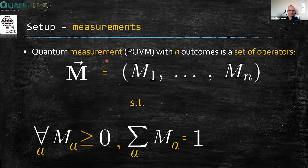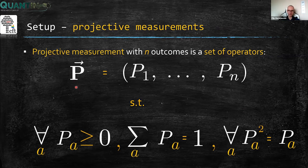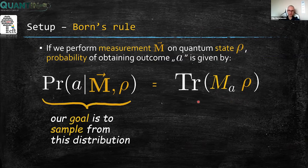Let's start with the basic definitions. A quantum measurement, or a POVM with N outcomes, is a set of operators which are positive semi-definite and sum up to identity. Projective measurements are a subset of general measurements such that the measurement operators fulfill the additional requirement of being projectors. A bold letter with an arrow will denote the whole measurement — the set of operators — while italics will denote the operators themselves. The last basic definition we need is Born's rule: if we perform measurement M on a quantum state ρ, then the probability of obtaining outcome A is given by the overlap of the corresponding measurement operator with the quantum state. Our goal is to sample from this distribution.